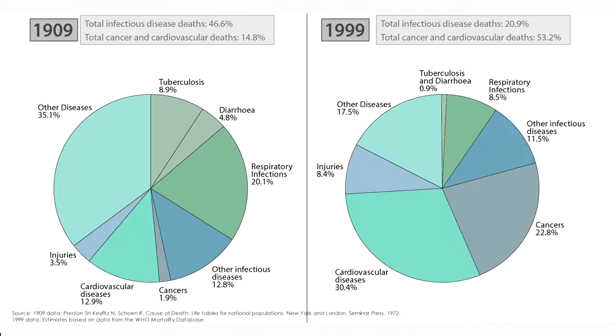This gives you an example of how infectious diseases have changed historically. In 1909, the percentage of infections in Chile causing mortality and morbidity was about 50%. Fast forward to 1999, those figures are now down to about 22–23%. So in 90 years, we have seen a dramatic reduction in the importance of infections as causes of mortality and morbidity.